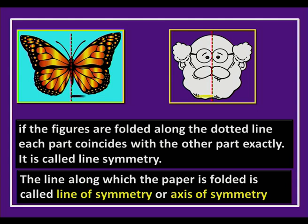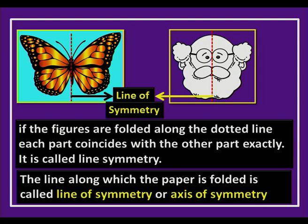The line which divides the figure, or along which the paper is folded, is called the line of symmetry — or even the axis of symmetry. In these examples, the vertical line shown in the figure is the axis of symmetry.